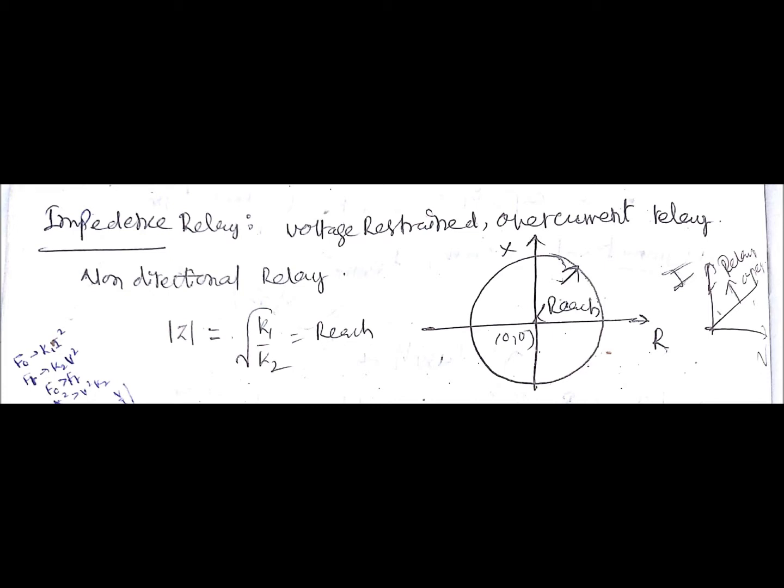The operating force is current and the restraining force is voltage. This is a non-directional relay because if you observe the impedance locus, you have a circle with a center at (0,0) and the radius is nothing but the reach. Since the characteristics exist in all directions, we cannot take it as a directional relay — for a directional relay the characteristics should lie in a particular direction.